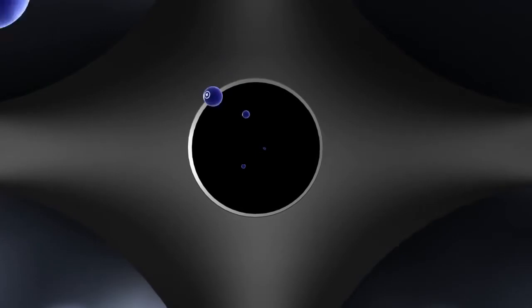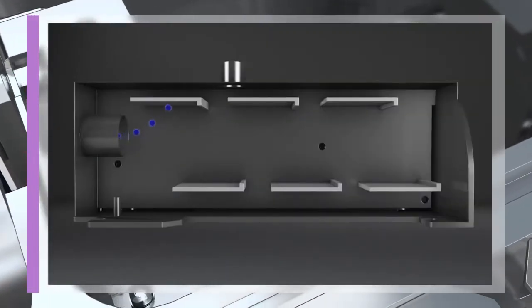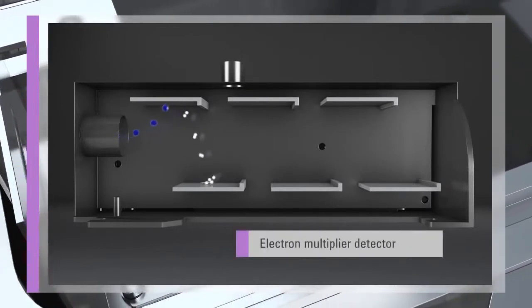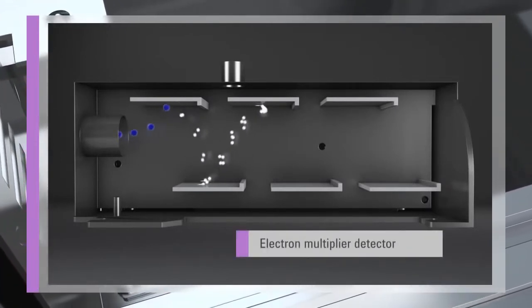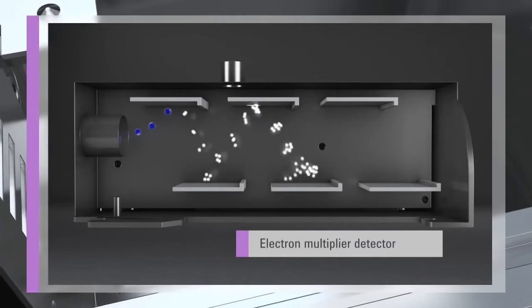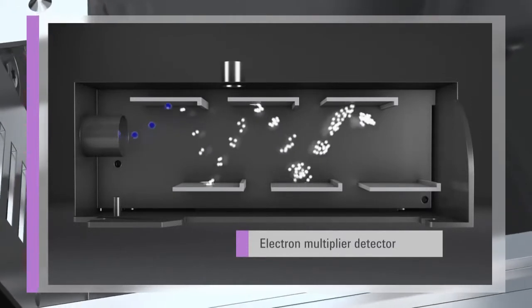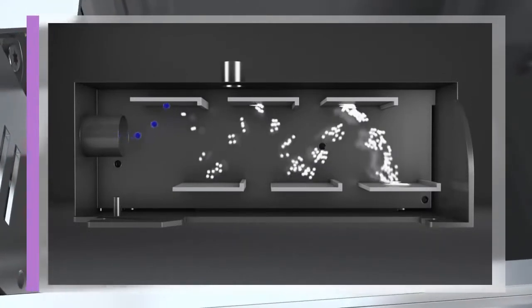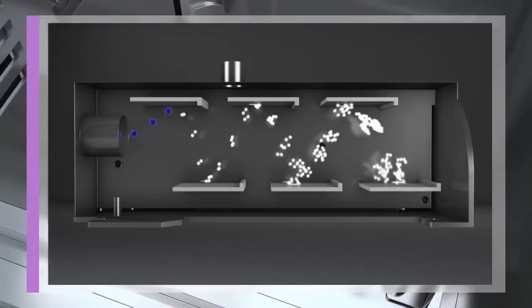The ions selected by the quadrupole are passed to the simultaneous dual-mode electron multiplier detector. The detector covers a full nine orders dynamic range, allowing trace and major elements to be measured in a single run. The 100 microseconds minimum dwell time also makes the 7700 the ultimate system for time-resolved analysis, such as laser ablation or chromatography.